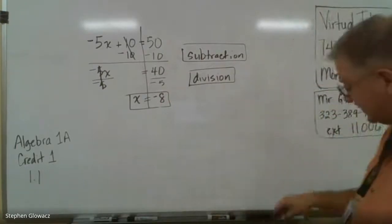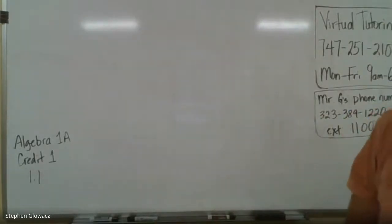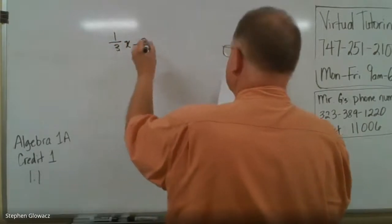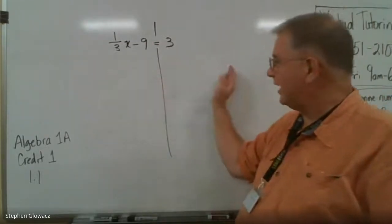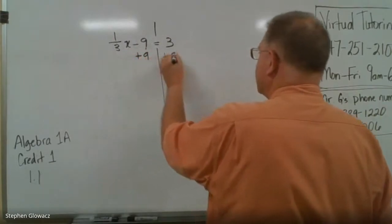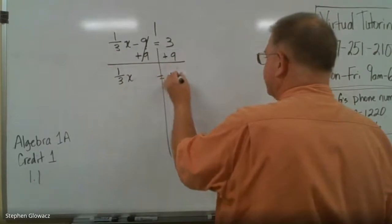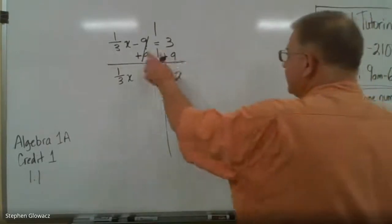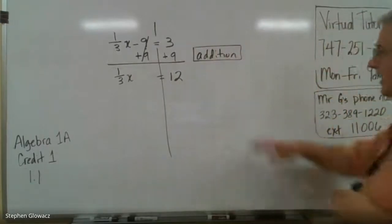Now let's go to number 3 on the same page, page 16. We have 1 and 1/3 x minus 9 equals 3. We're going to draw our line there — the purpose of that line is just to separate the left side and the right side of the equal sign. For our first step, we notice that we have a minus 9 there, so we're going to add 9 to both sides. The 9s cancel, and we have 1/3 x, and then 3 plus 9 would be 12. The justification for our first step is going to be addition — it is the addition property of equality.